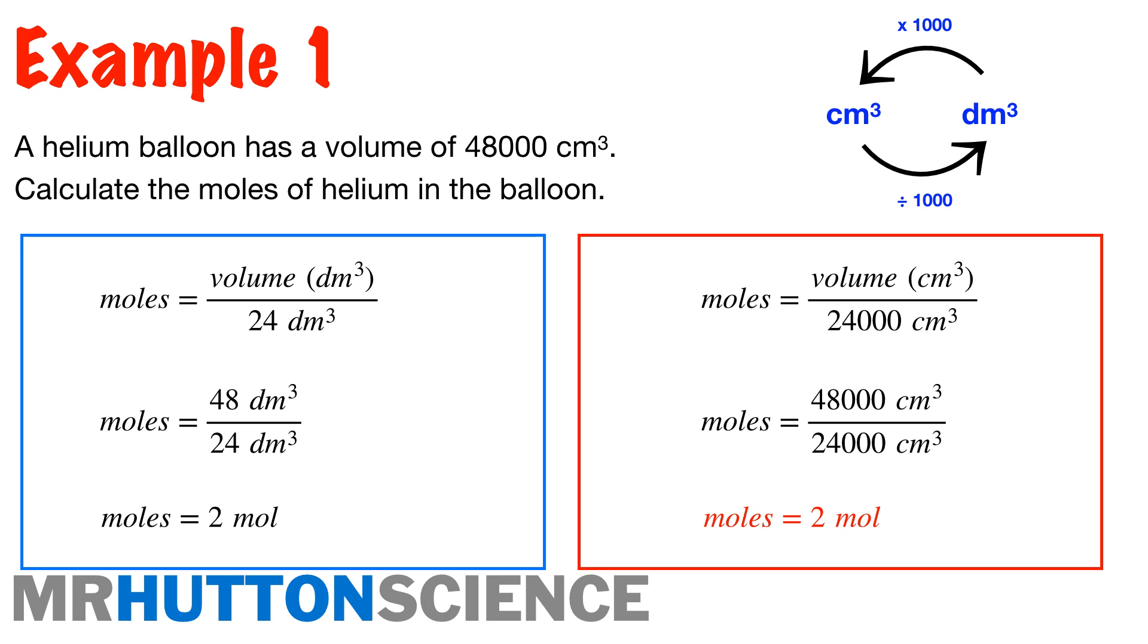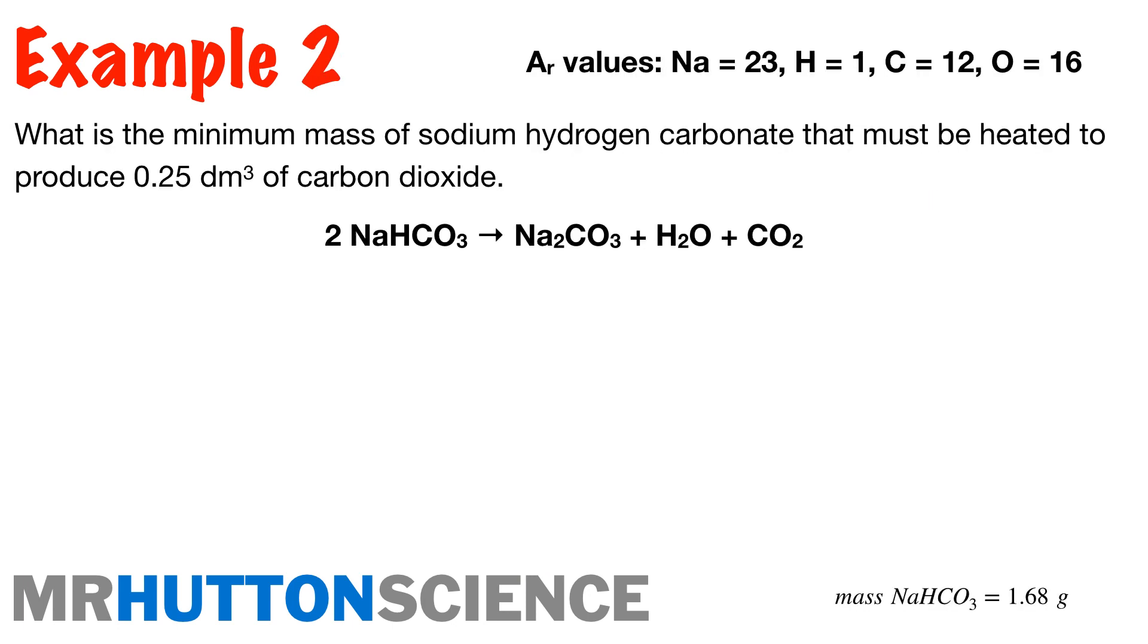That's a kind of easy one there. We're going to look at another example now, which is a bit more application. Example two. What's the minimum mass of sodium hydrogen carbonate, so that's the NaHCO3 we've got on the left there, that must be heated to produce 0.25 decimetres cubed of carbon dioxide? This is linking volumes of gas and reacting masses. So essentially what you're going to have to do is work out the moles of carbon dioxide from the volume you've got there, use the molar ratio to work out the moles that you'd have of sodium hydrogen carbonate, then multiply that by the relative formula mass to give you your mass of sodium hydrogen carbonate. Easy, right? If you want to, pause the video now and have a go, and then I'll run through the example in a moment anyway.